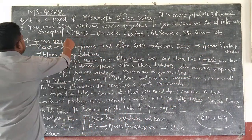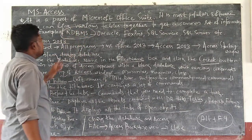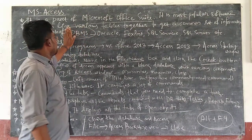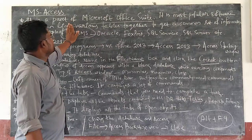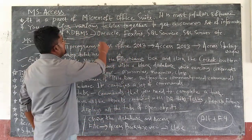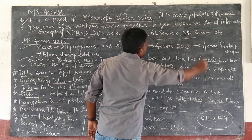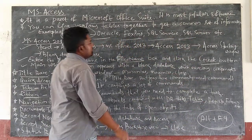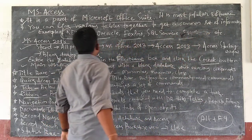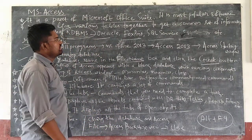Examples of database management systems — RDBMS, that is Relational Database Management System — are Oracle, FoxPro, SQL Server, etc.